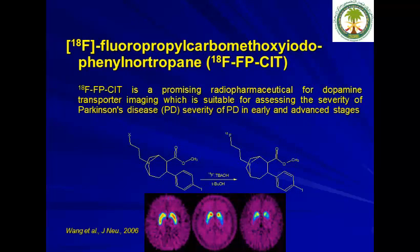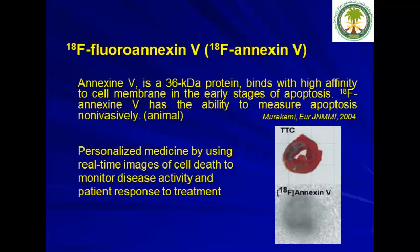F18-FPCIT is a promising radiopharmaceutical for dopamine transporter imaging, suitable for assessing the severity of Parkinson's disease. It is showing very good images, and production of this radiotracer is also straightforward.